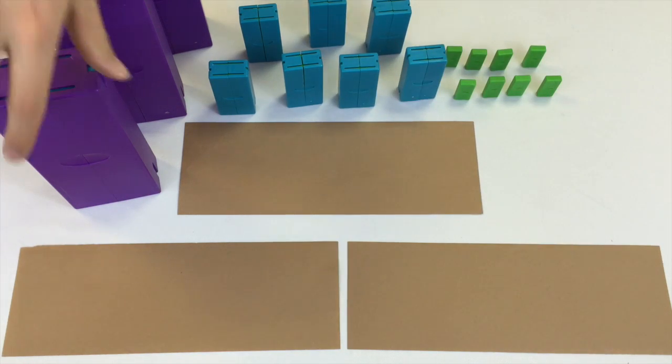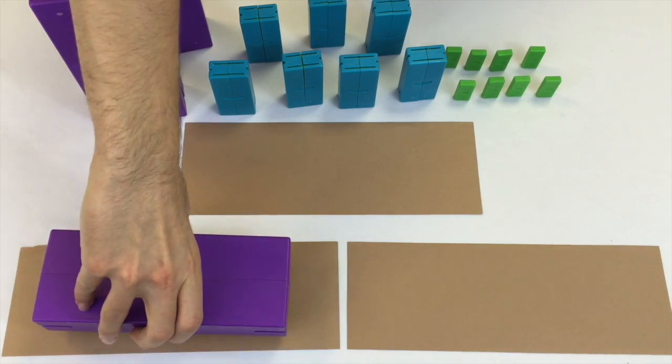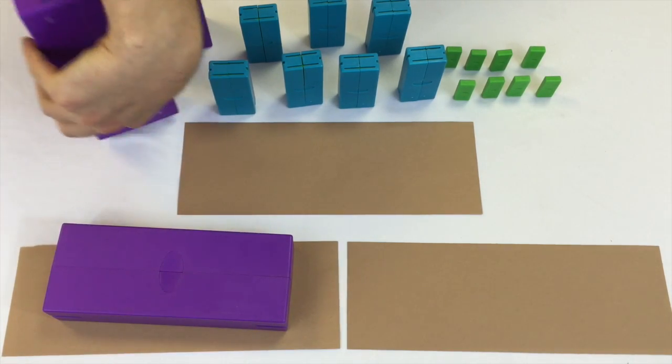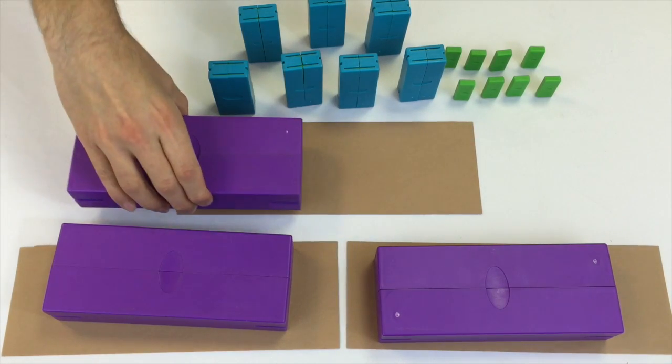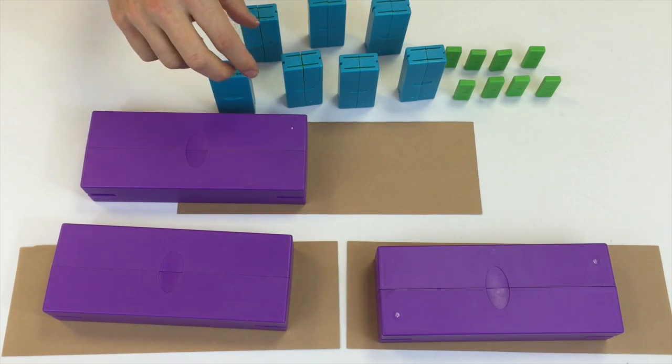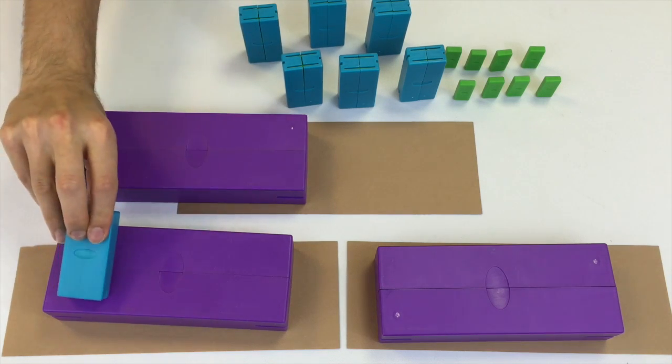I'm gonna start with the hundreds. I'm gonna give 100 to each group. I'm just gonna pass them out one at a time. Then I'm gonna start passing out the tens. I'm just gonna do this one at a time.